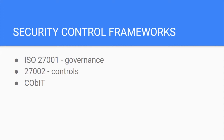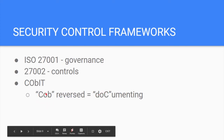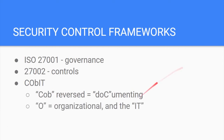CoBIT is a framework aimed at documenting organizational IT security controls. If you take the first three letters of CoBIT — C-O-B — and reverse them, it spells DOC. So you can remember it as documenting the organizational IT. DOC reversed is CoBIT.